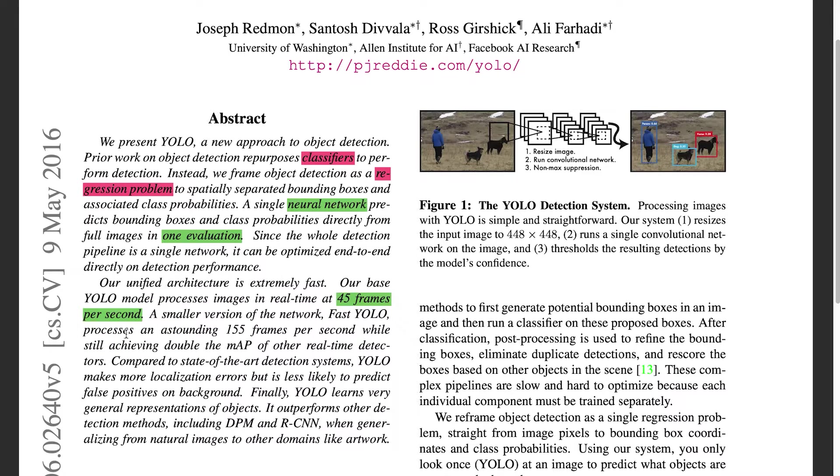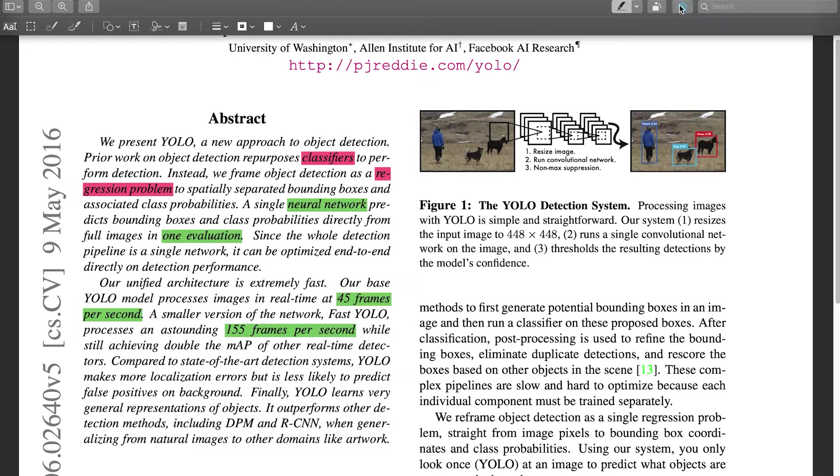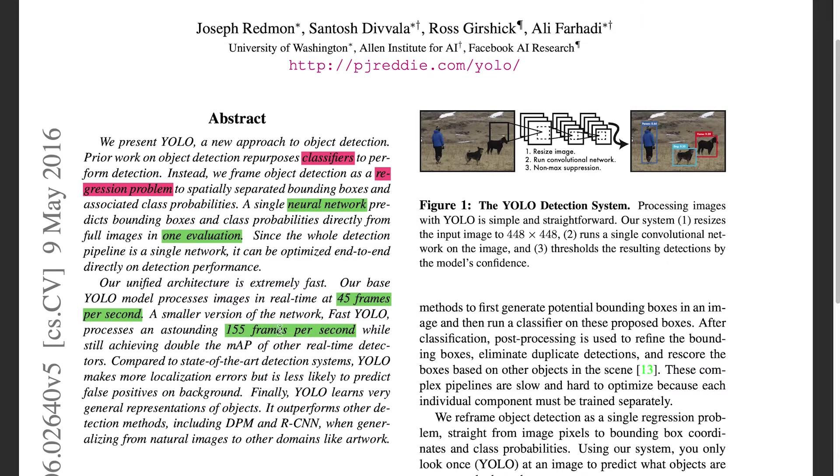A smaller version of the network, fast YOLO processes an astounding 155 frames per second, while still achieving double the MAP of other real-time detectors. I don't quite understand what MAP means, so let's look that up.